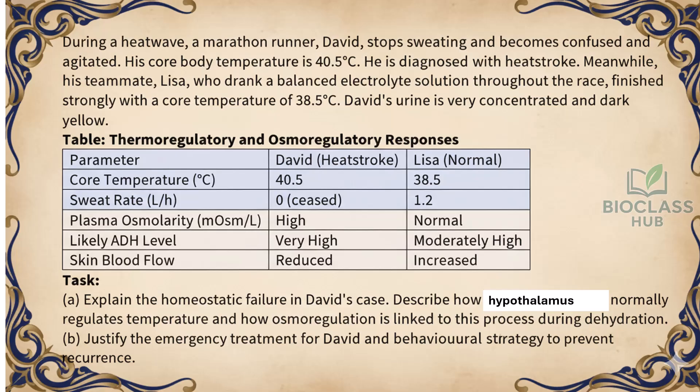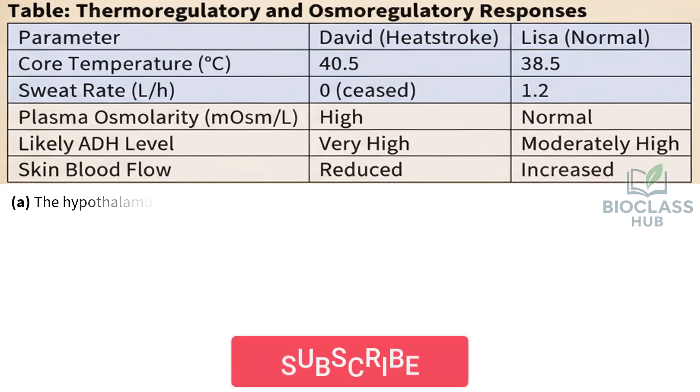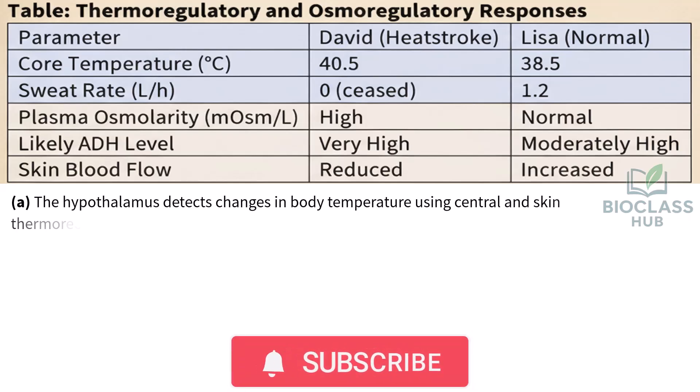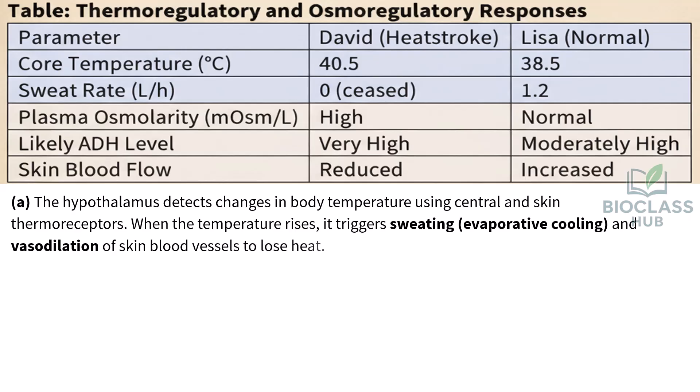Analyze the data in the table — look out for variations between normal and David's parameters. Part A: Explain the homeostatic failure in David's case, describing how the hypothalamus normally regulates temperature and how osmoregulation is linked to this process during dehydration. The hypothalamus detects changes in body temperature using central and skin thermoreceptors. When temperature rises, it triggers sweating, evaporative cooling, and vasodilation of skin blood vessels to lose heat.